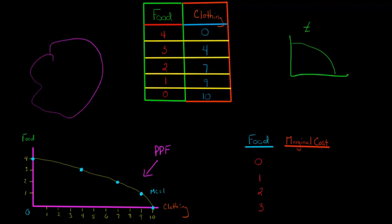But the marginal cost changes — it's not constant. The whole reason we have this bowed-out graph is that marginal cost is going to be increasing. As we go from one unit of food to two, we go up one additional unit of food. Now we have to give up two units of clothing. If you go back to the numbers, going from nine to seven units of clothing, we give up two this time to get an extra piece of food. So the marginal cost here would be two.